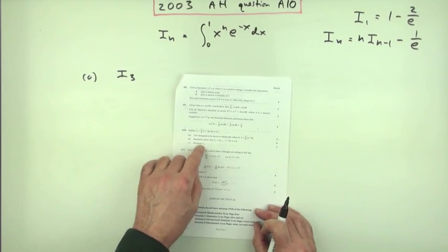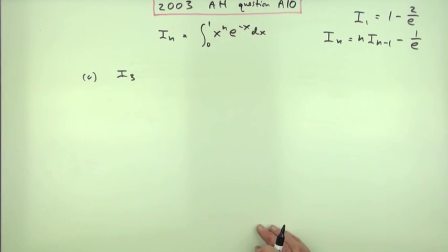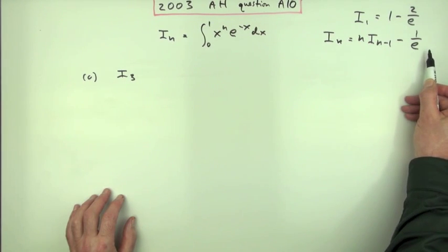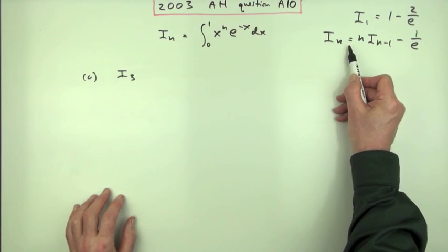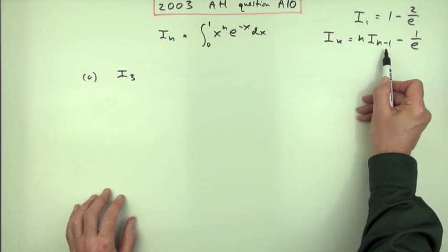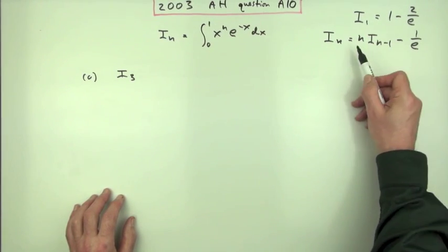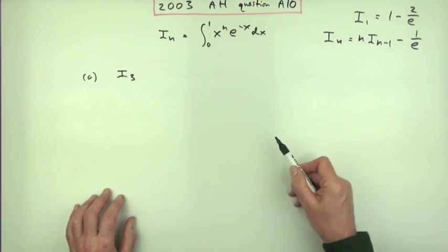Part C, evaluate i₃. Well, just like in the Higher, there's a recurrence relation, just like u_n equals a u_(n-1) plus b. And then it would tell you u₁, for instance, where you start.